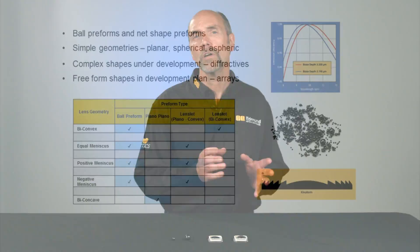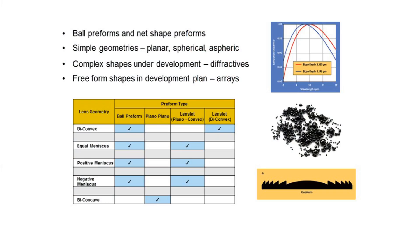So what else are we working on? We're molding planar surfaces, spherical, aspheric, and diffractives. We're also looking at insert molding, where we would mold a lens right into a barrel, and we're looking at molding of arrays and even expanding the diameter size. Right now our comfort range is between 5 and 35 millimeters, but we're looking at going beyond that. These are all in the works right now — in the plan, just not fully completed.